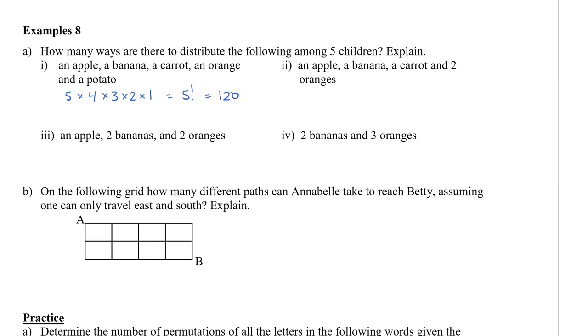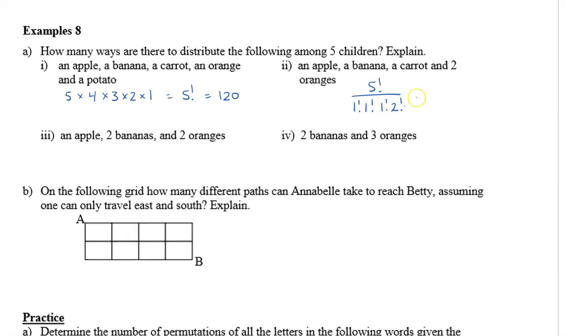What happens if we take that potato? Nobody wants a potato. So we're going to change it into two oranges instead. So the two oranges are the same. Whether child A or child B gets orange one or orange two, it doesn't really matter. So what's going to happen is we have five factorial in our numerator, one factorial for apple, one factorial for the banana, one factorial for the carrot, and then two factorial for the oranges. Notice that we have one plus one plus one plus two, which equals five, which is the same number on the numerator. And this gives us 60.